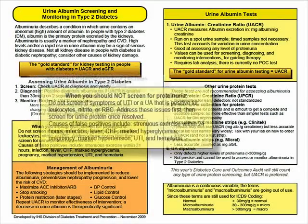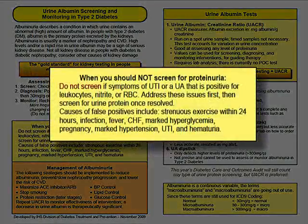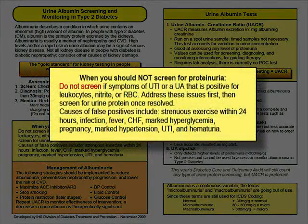Remember, you should not screen for albuminuria under certain conditions, such as if the patient has a UTI, or if the urinalysis is positive for leukocytes, nitrite, or RBCs. Resolve these issues first, then screen for urine albumin.